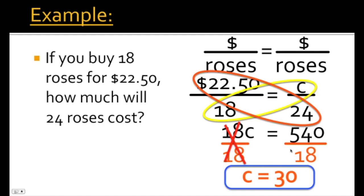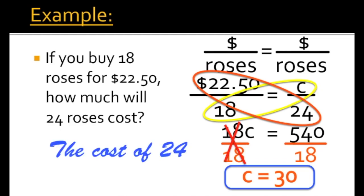It's really important that when you're solving word problems using proportions, you take your answer and plug it back into what the question was asking. Here we're talking about the cost of 24 roses, and we found c, the cost. So the cost of 24 roses is $30.